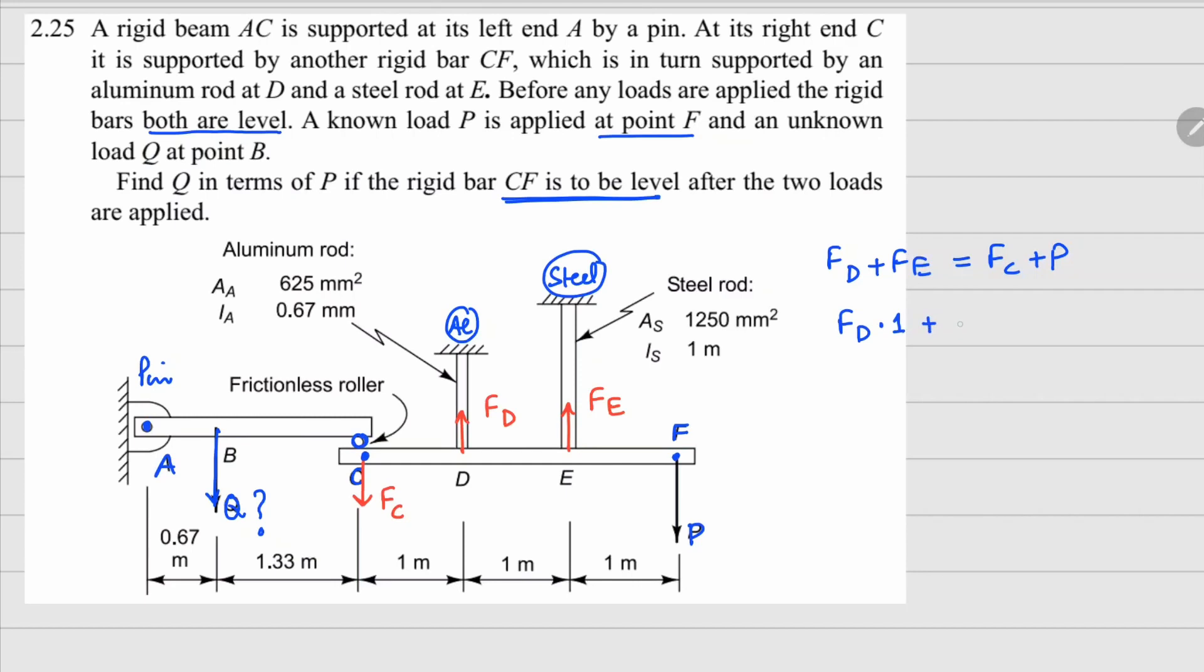Plus FE times 2 meters, this will equal P times 3 meters. So basically this equation becomes FD plus 2FE equals 3P. So I have got one equation here and the second one here. In terms of unknowns, FC is unknown, FD is also unknown, and FE is also unknown.